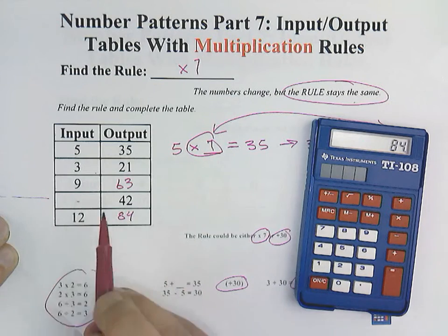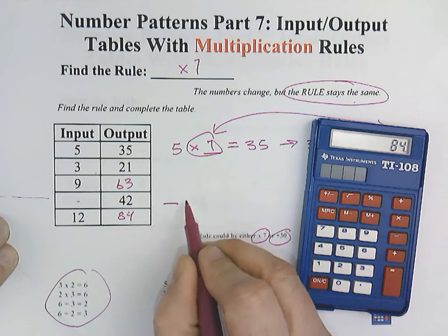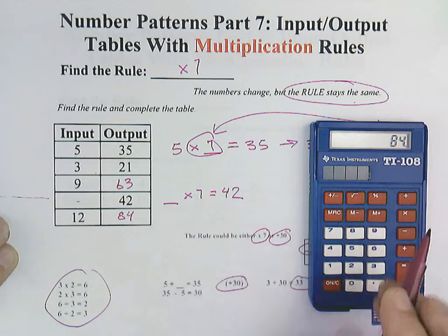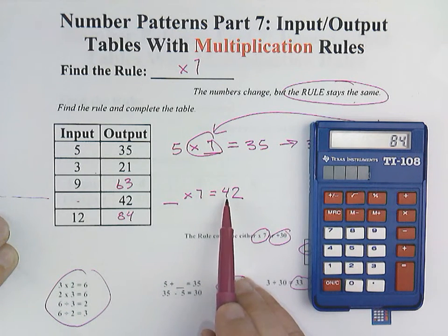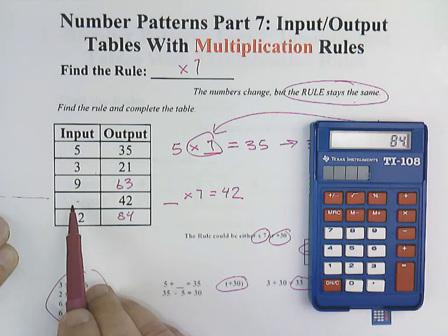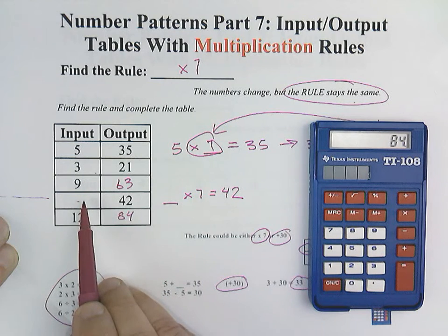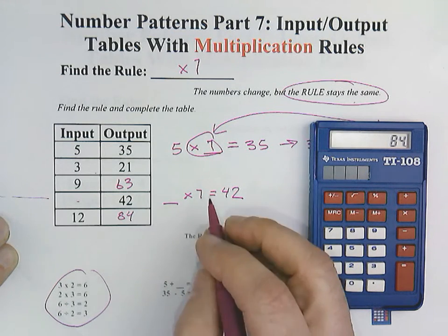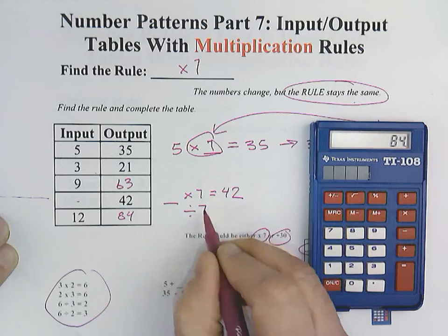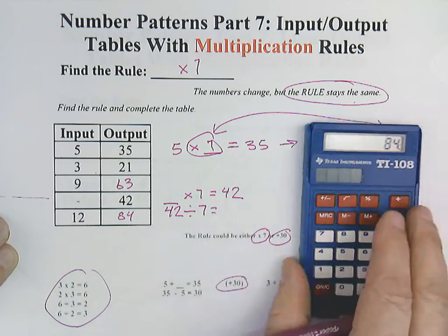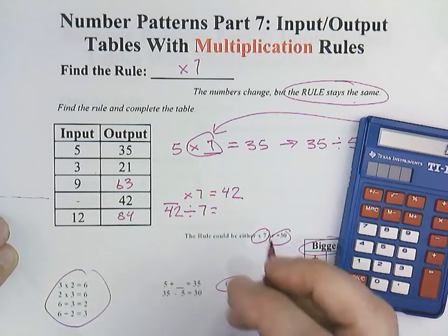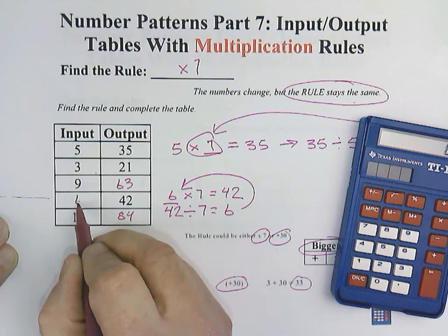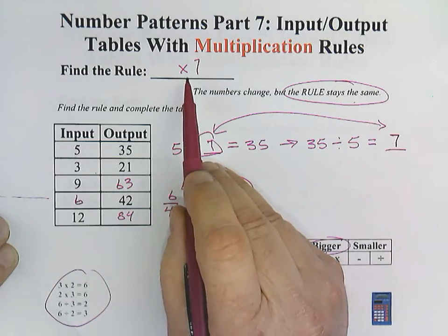So here we do not have the first value, but we can do it the same way. We would just say blank times 7 equals 42. Because of fact families, I know that instead of multiplying by 7, remember we're working from left to right. In this case, we're working opposite. We're working from right to left. We can also work this problem the opposite. The opposite of multiplication would be division. So in other words, 42 divided by 7 would equal 6. Whatever number we have here, because of fact families, goes there. So this would be 6. So we've completed our table with a times 7 rule.